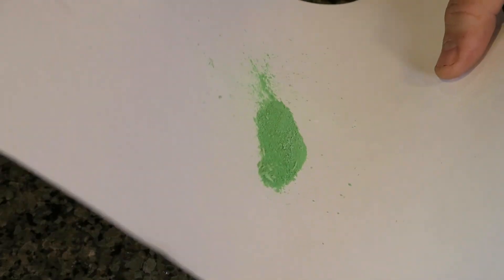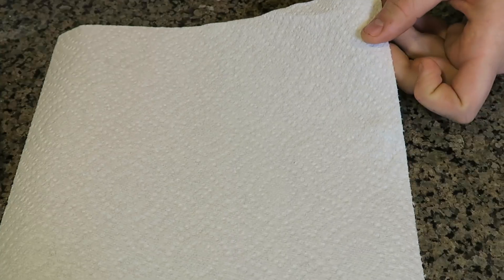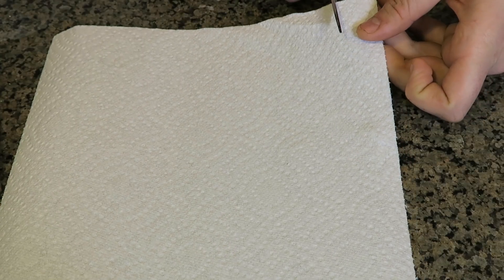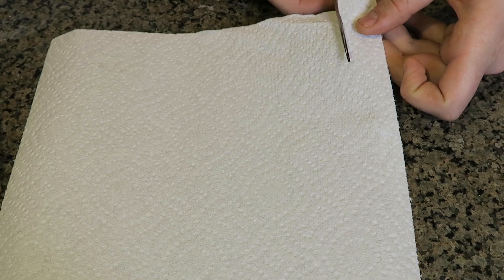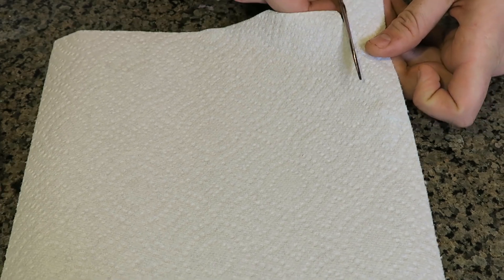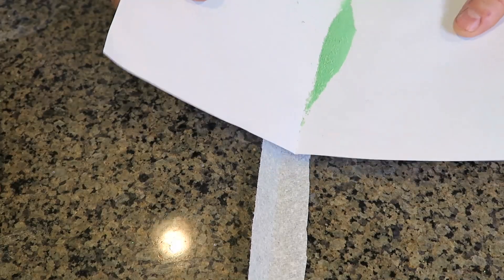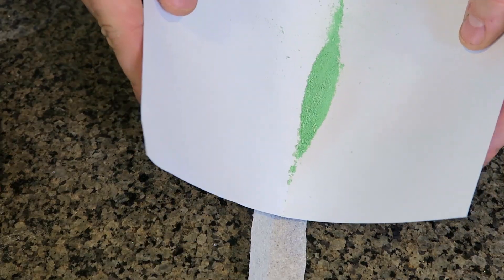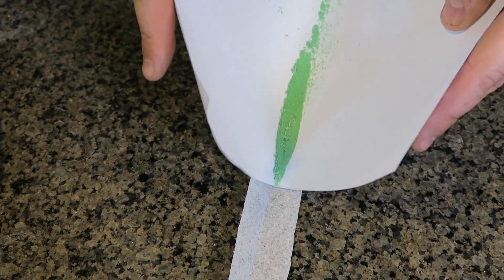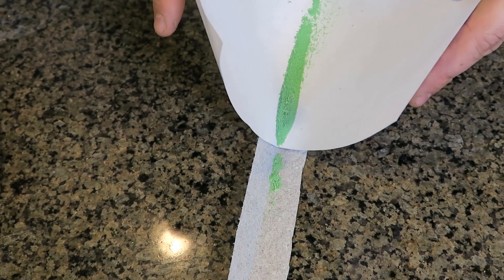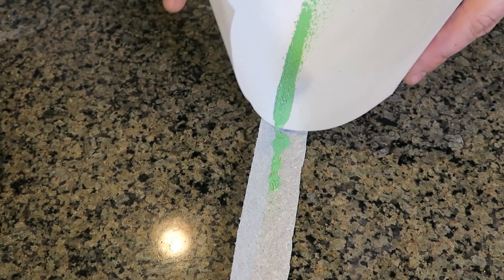So as you can see it looks like a powder now. Next what I'm gonna do is grab a piece of paper towel and just cut it off like that, a slice. Now I'm gonna grab the match heads and I'm gonna spread it on top of this little napkin, just like this.